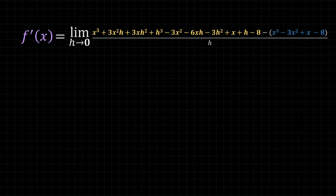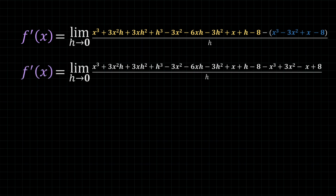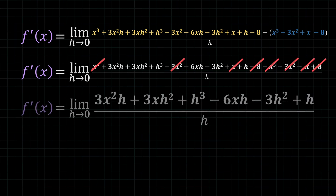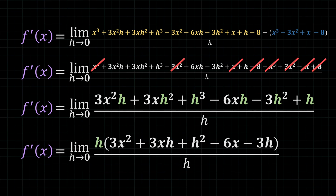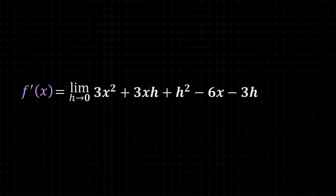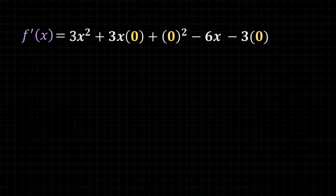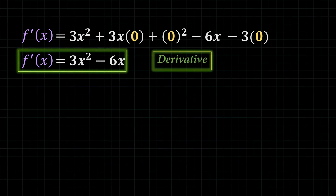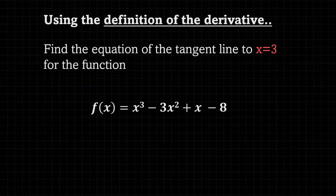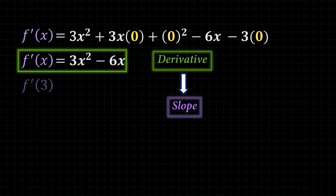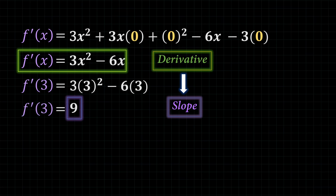Don't forget to distribute the negative sign into the brackets, getting rid of the brackets. Now we can combine like terms, leaving us with something that looks like this. Again, every single term in the numerator has an h, which means we can factor it out. Once we factor it out, we can cross out the denominator, getting rid of the fraction. Now we only have the numerator left, so we can plug in zero for h, which gets rid of the limit. Simplifying gives us our derivative. To find the slope, we see x equals 3 in the question, so we plug in 3 for x in the derivative, giving us a slope of 9.